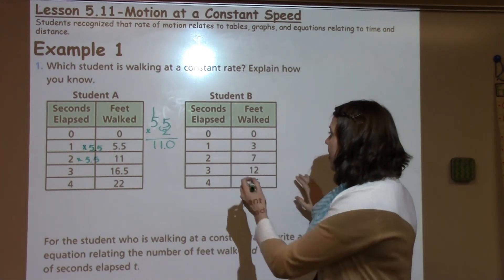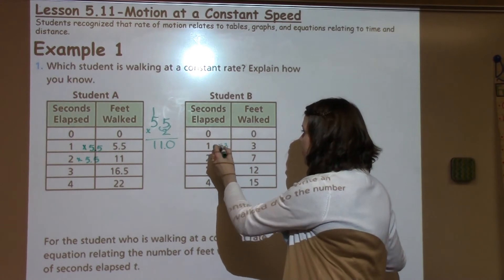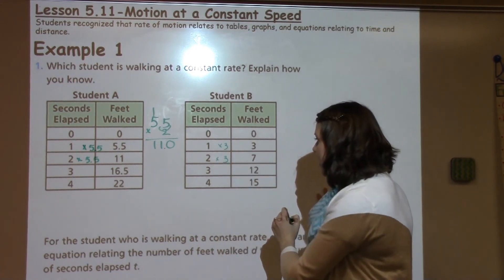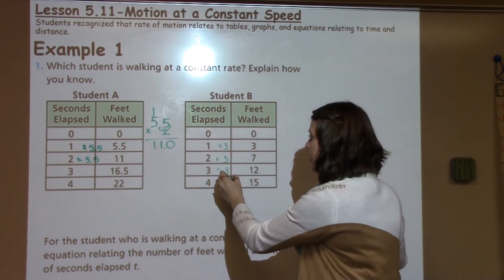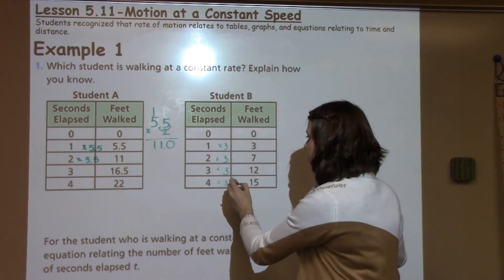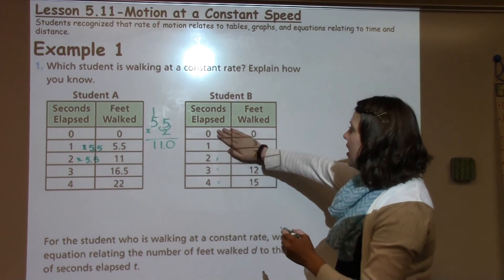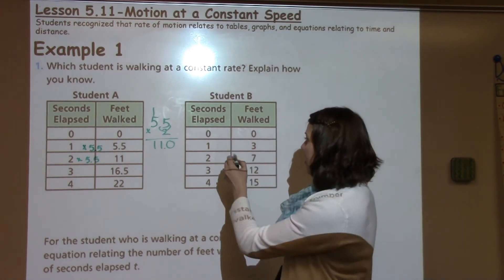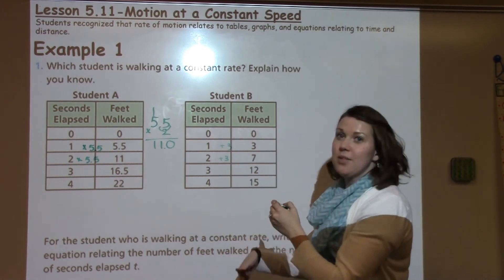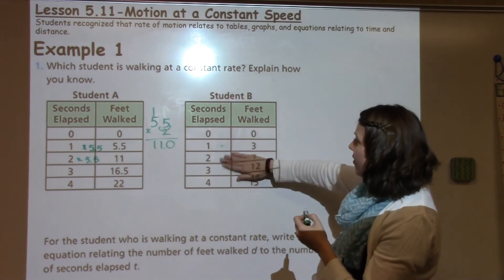Then I've got 2 to 7. If this were times 3, then 2 times 3 is 6, but we have 7. 3 times 3 is 9, 4 times 3 is 12. This isn't looking like it's times 3. Even if I do addition, I would get different amounts. So this is not increasing at a constant rate.